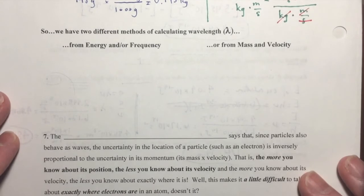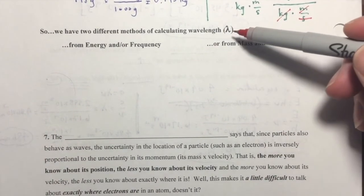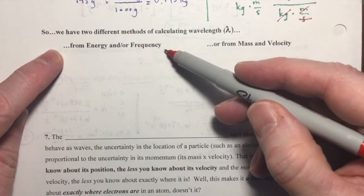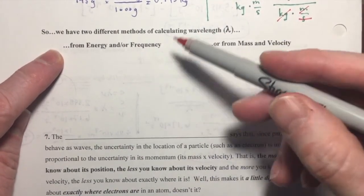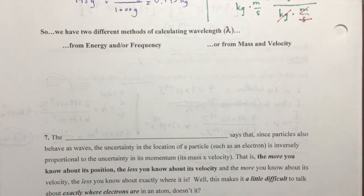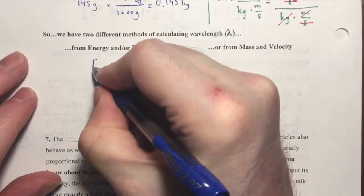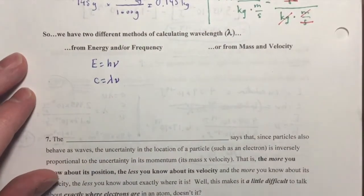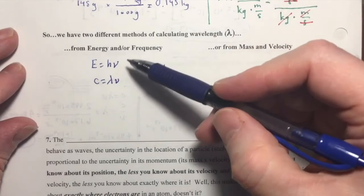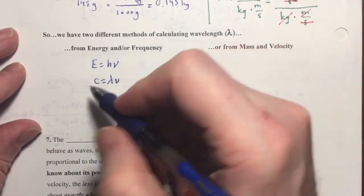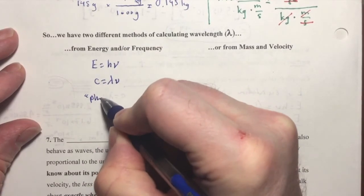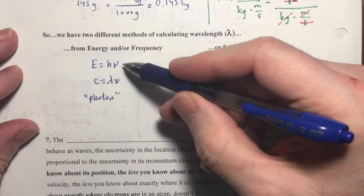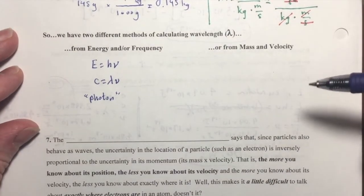All right. So, that's how we do that. This brings us to the realization that now we have seen two different methods of calculating wavelengths, lambdas. We have a method of calculating a wavelength if you're given energy or frequency. And the equations that we use for that are these right there. So, if you're asked for the energy or frequency of a photon, for example, then you'll be using this method.